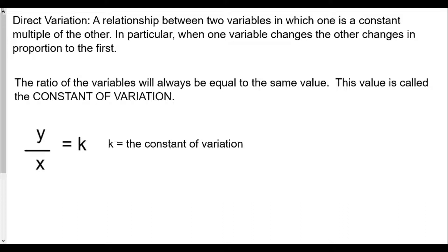So a direct variation is a relationship between two variables in which one is a constant multiple of the other. In particular, when one variable changes, the other changes in proportion to the first. So as one variable goes up, the other one will go up as well. And one goes down, the other goes down in the same proportion. The ratio of the variables will always be equal to the same value. This value is called the constant of variation.